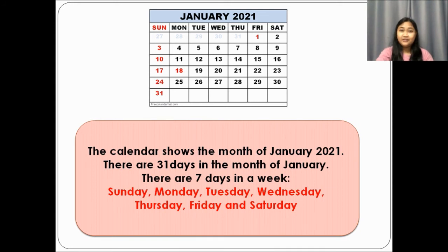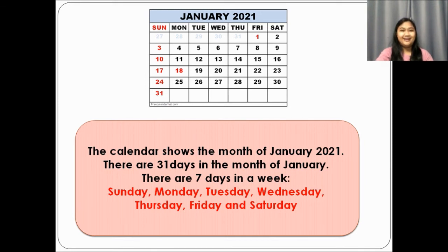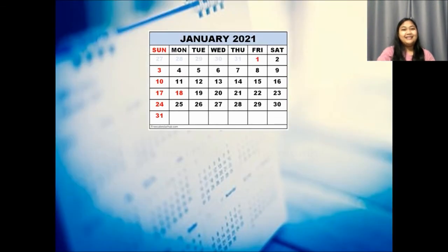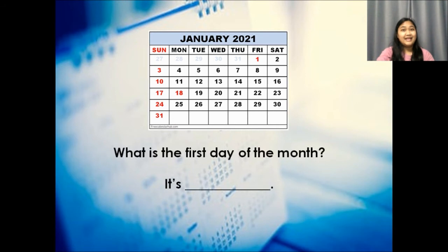There are seven days in the week: Sunday, Monday, Tuesday, Wednesday, Thursday, Friday, and Saturday. Now let's answer this one — what is the first day of the month?